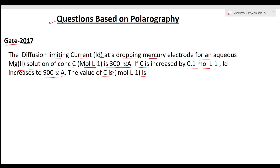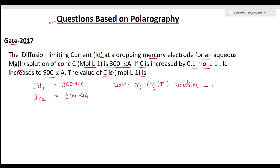We need to find the value of concentration C. The first given value is I_D1 = 300 microamperes, and the second is I_D2 = 900 microamperes. The first concentration is C, and when diffusion current is 900 microamperes the concentration is C + 0.1. We know that the diffusion current I_D is directly proportional to concentration, so we can write I_D1 / I_D2 = C1 / C2.